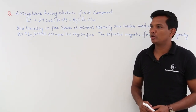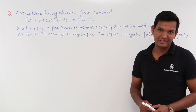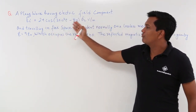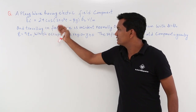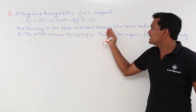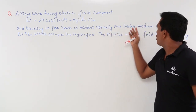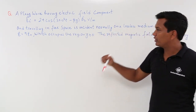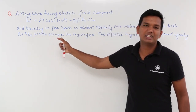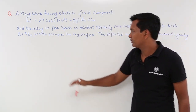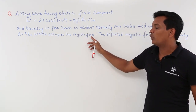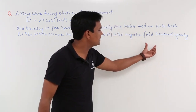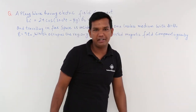In this class, we will try to solve a problem of normal incidence. It is given that an electric field component is travelling in free space and is incident normally on a lossless medium with μ = μ₀ and ε = 9ε₀. This is the property of the second medium which occupies the region y ≥ 0. We have to find the reflected magnetic field component.